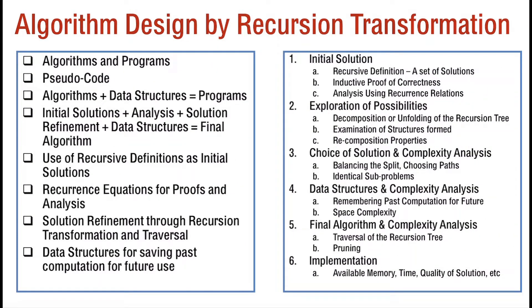We have seen that our process of algorithm design by recursive transformation goes through a phase of initial solutions, which is a recursive definition with an inductive proof of correctness and analysis of the recurrence relation. Then we unfold the recursion tree and examine the structures. From this we determine various kinds of choice points and complexity analysis, and then we identify the data structure required to remember past computation for future use, and then go on to develop the final algorithm.